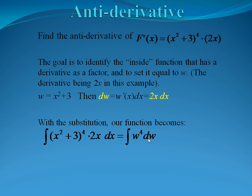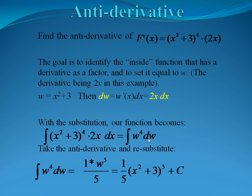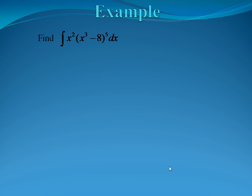This is convenient because we know how to integrate this — it's of the same form as x to the n. When we integrate, we add 1 to the power and divide by the new power. Adding 1 gives us w to the fifth, divided by 5. Now we substitute back in for w: that gives us one-fifth times (x squared plus 3) to the fifth power. We always remember to add plus c when finding an antiderivative. So the antiderivative of (x squared plus 3) to the fourth times 2x is one-fifth (x squared plus 3) to the fifth plus c.